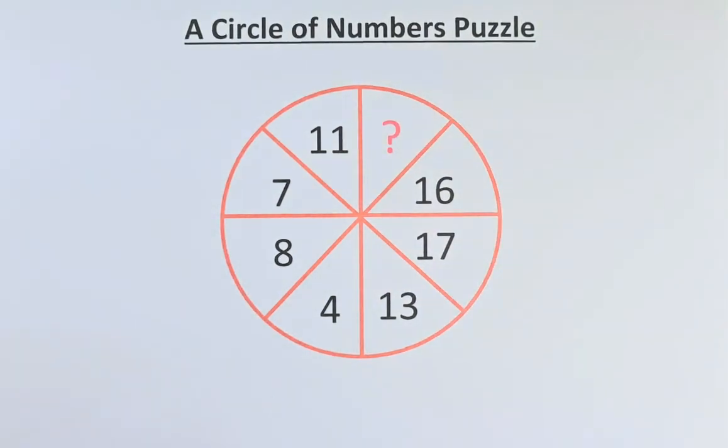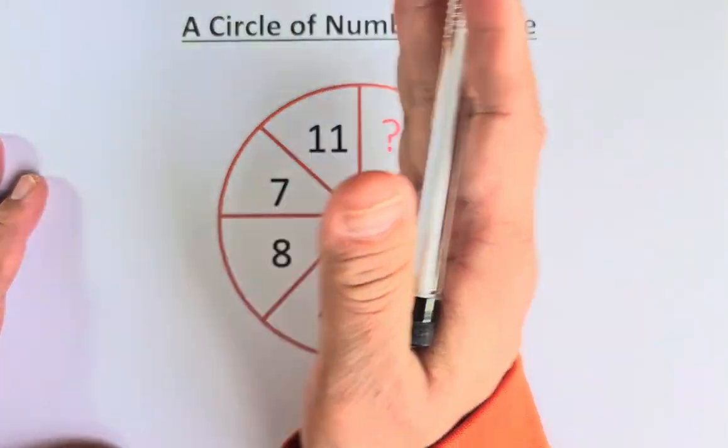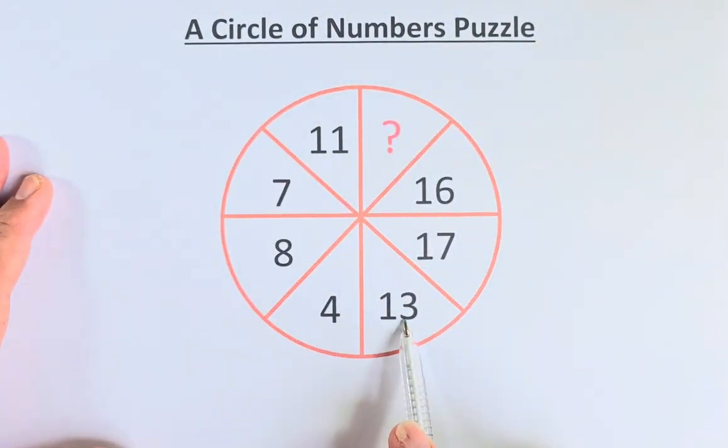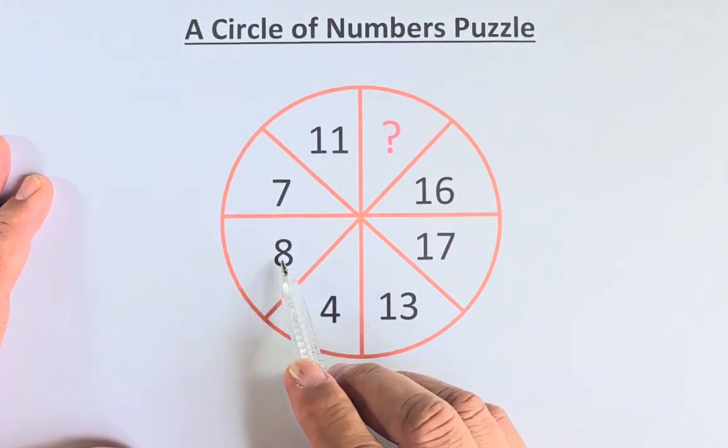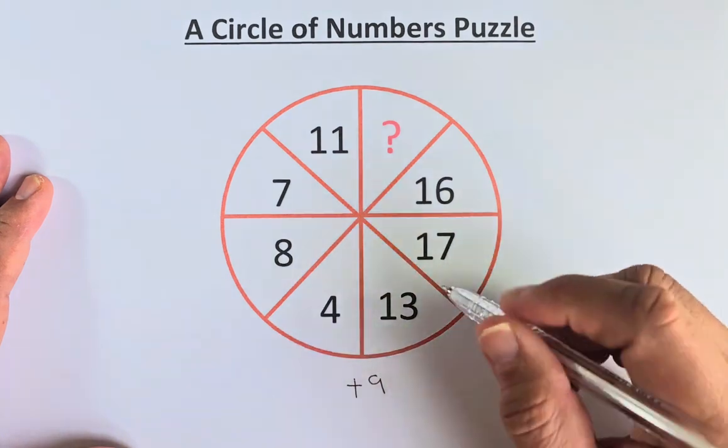The only other way to do it is look by dividing this puzzle into half. 4 to 13, you're going to add 9. 4 plus 9 will give you 13. 8 plus 9 will give you 17.